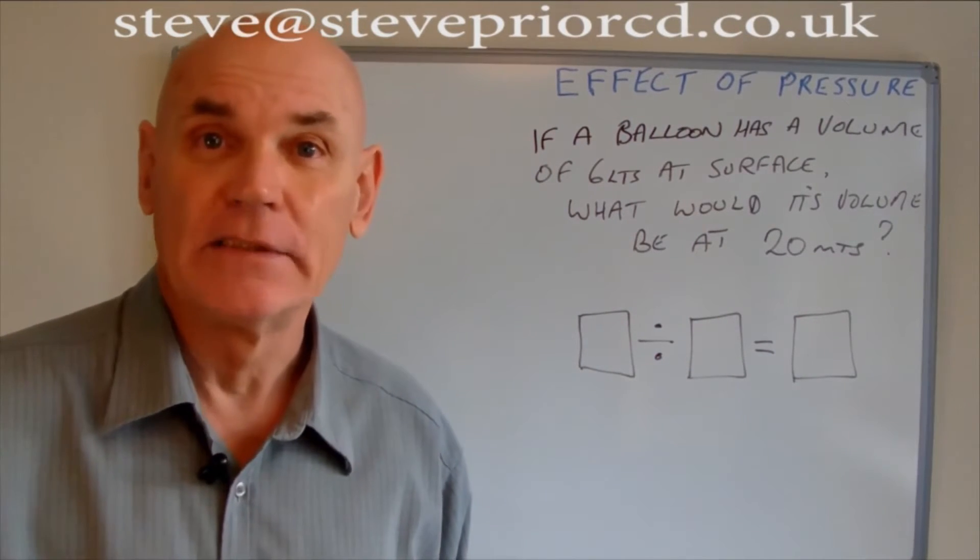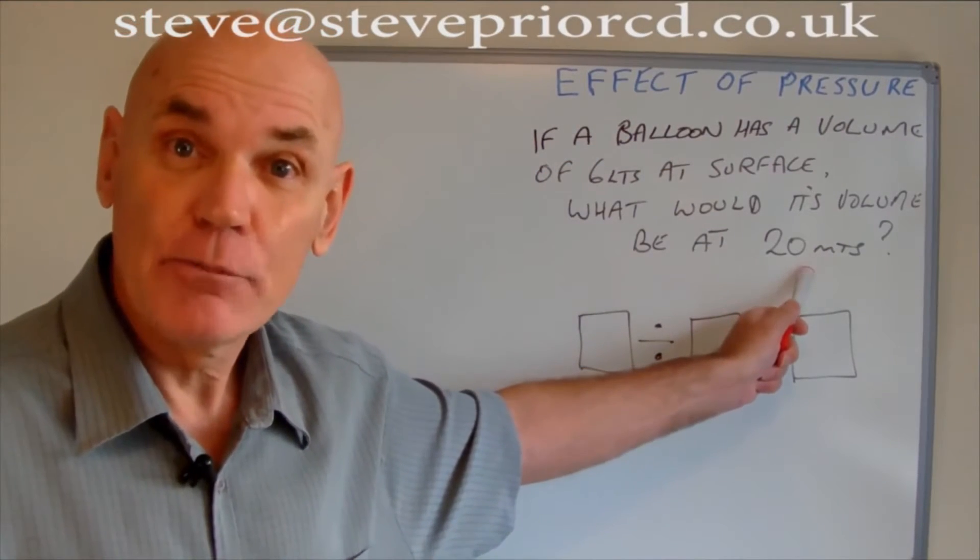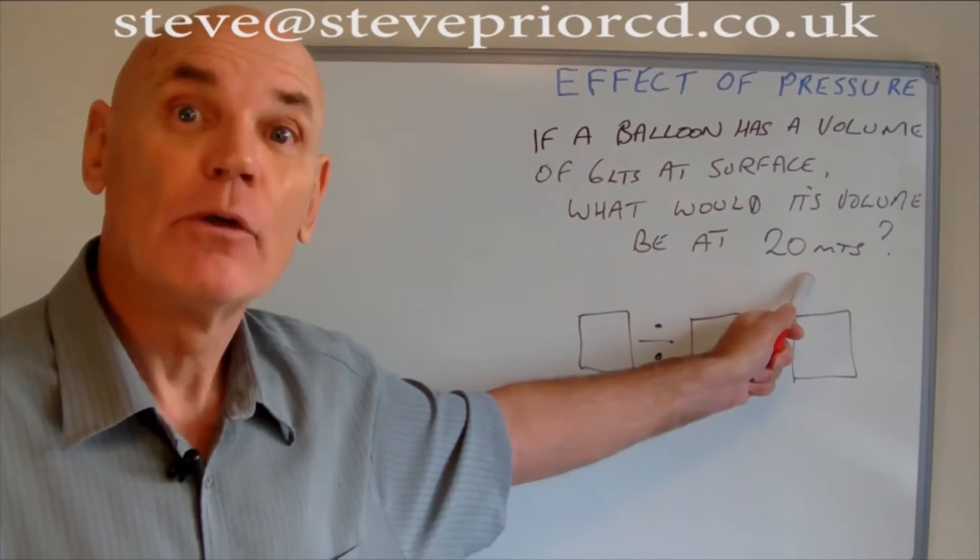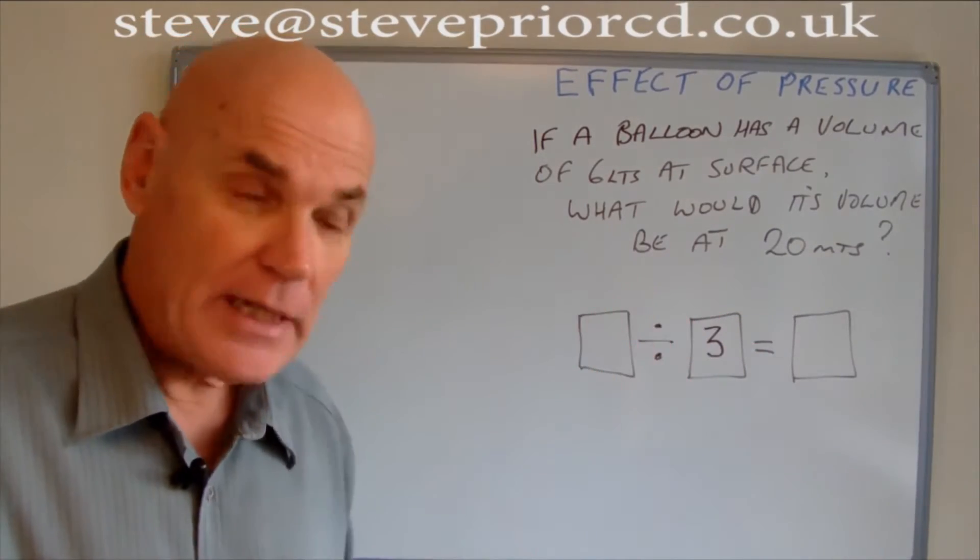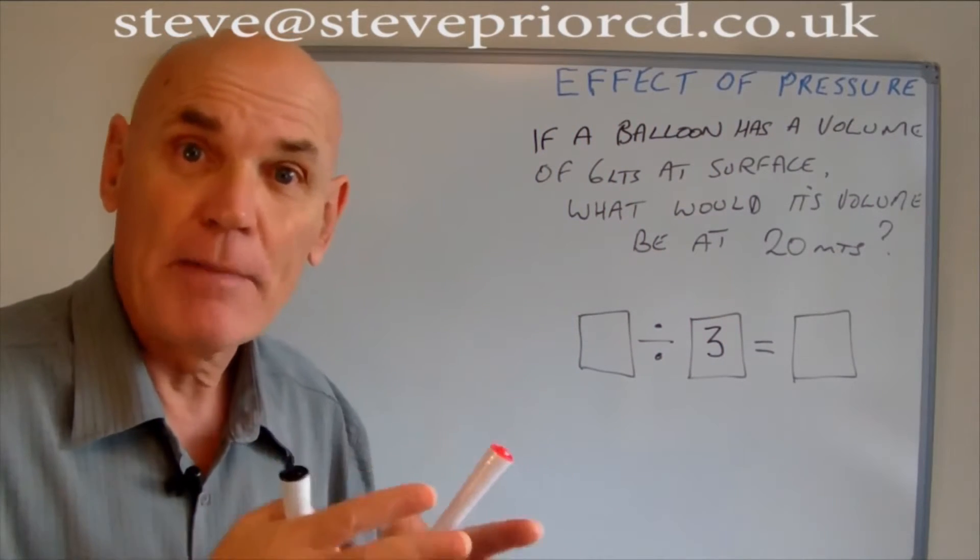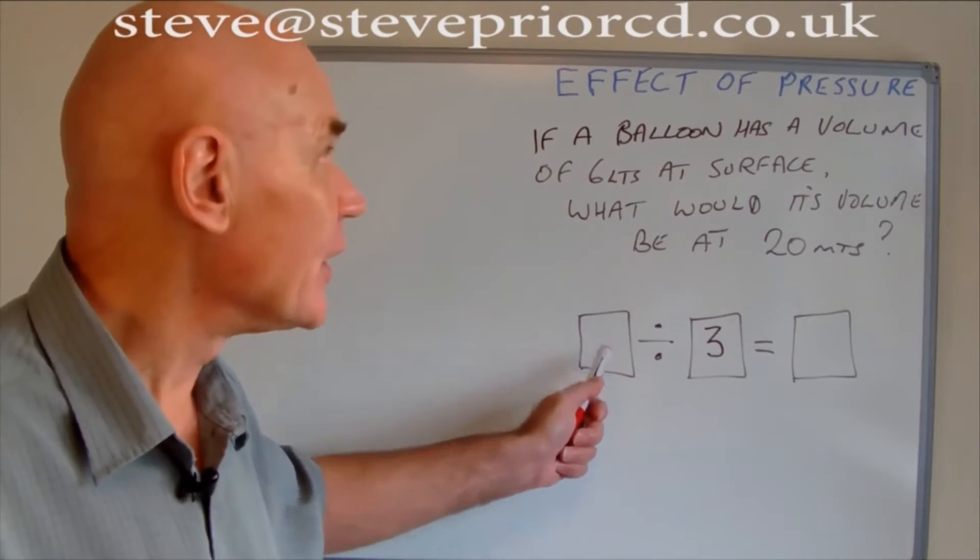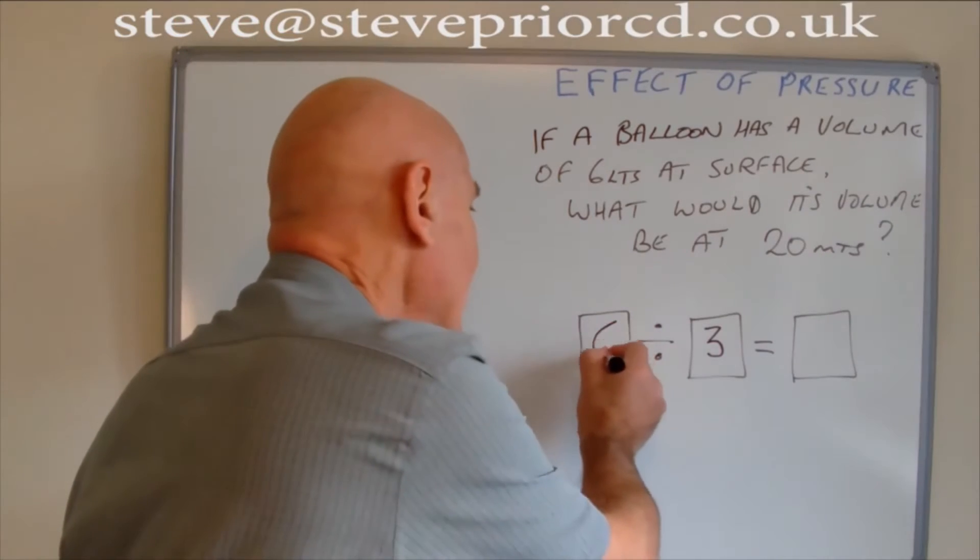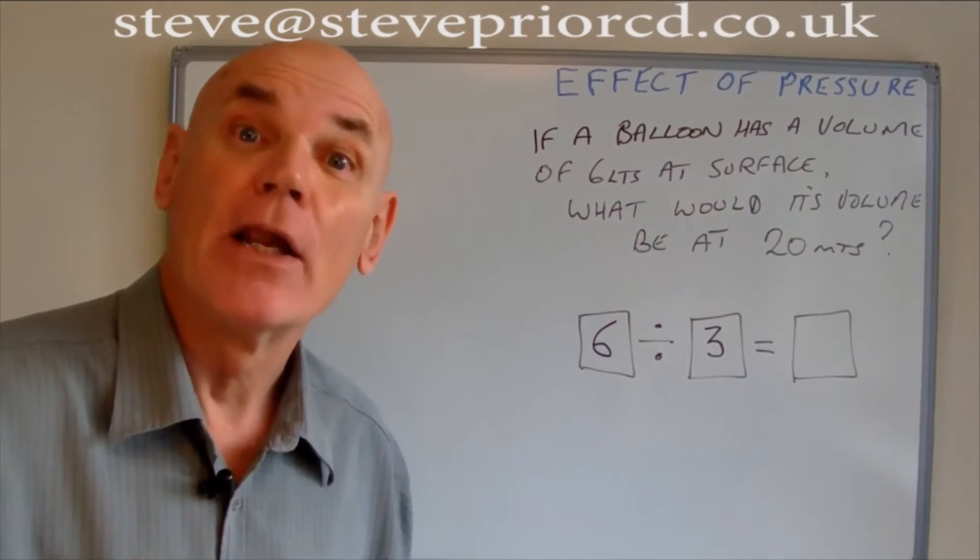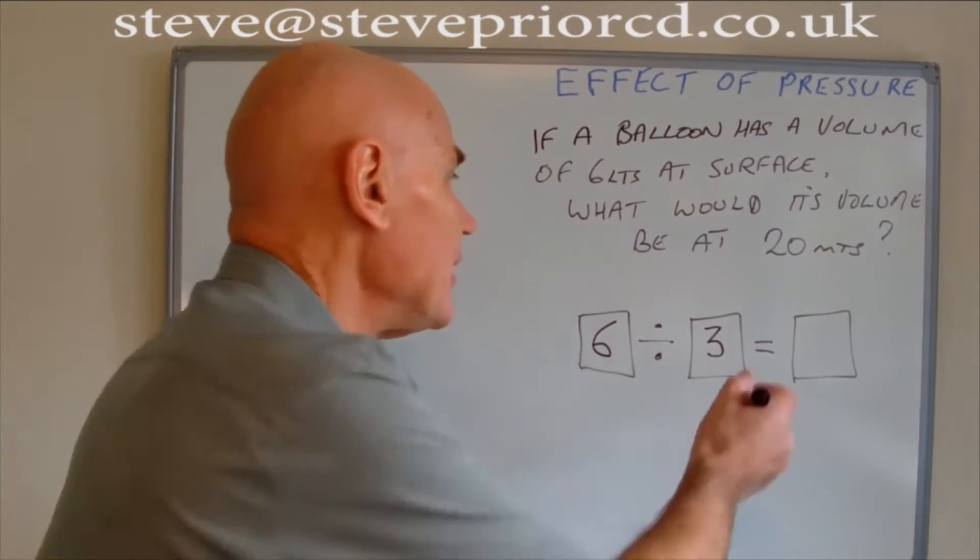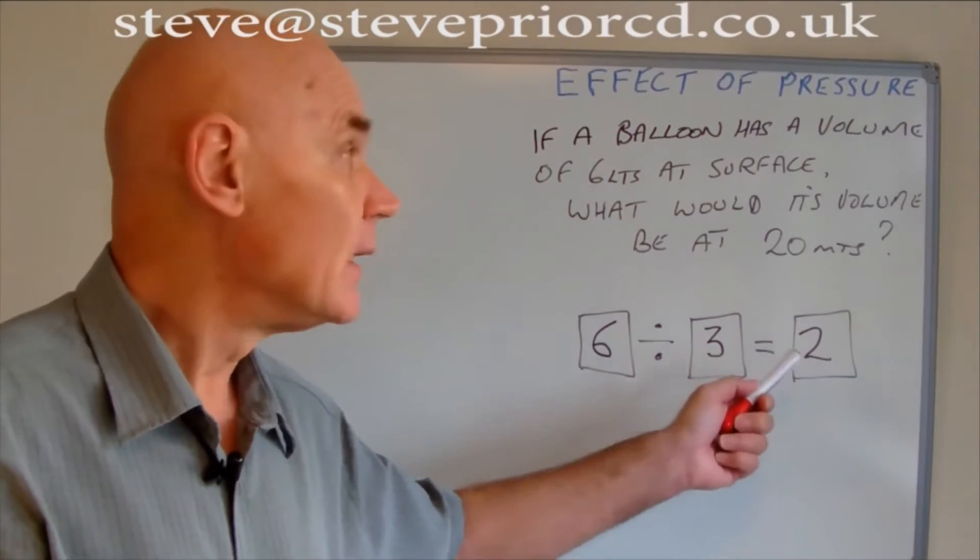So we've got that bit started. Now there's a golden rule with these boxes: the middle box is always going to be the absolute pressure. In this question, the absolute pressure at 20 meters would be three atmospheres. Can you see by doing the box method, I can do this piece by piece? The box over here is the number that's in the question - it has a volume of six liters, so six goes in here. Now I can get my calculator out if I need to and work out the sum that I know is going to be correct: six divided by three equals, so the volume of the balloon would be two liters at 20 meters.